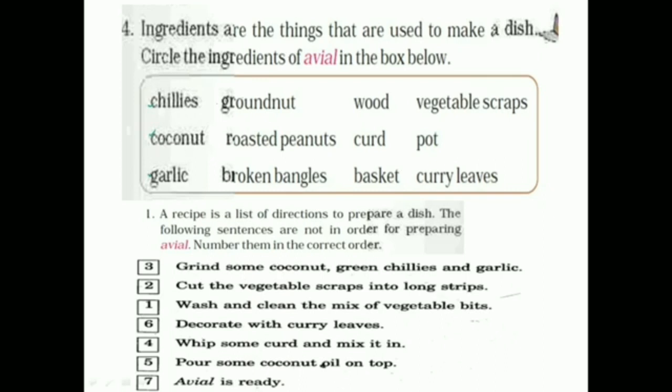So options are chilies, groundnut, wood, vegetable scraps, coconut, roasted peanut, curd, pot, garlic, broken bangles, basket, curry leaves.